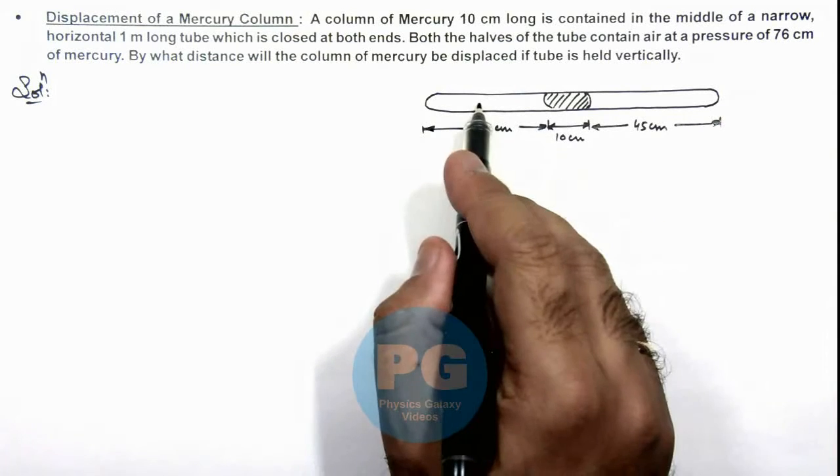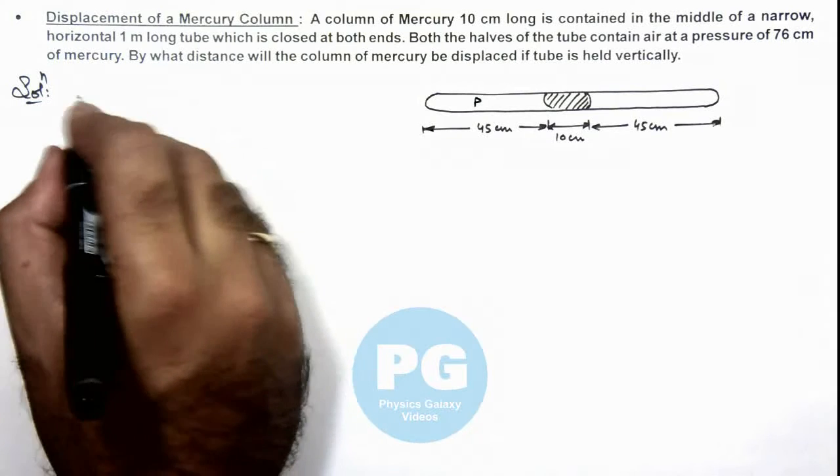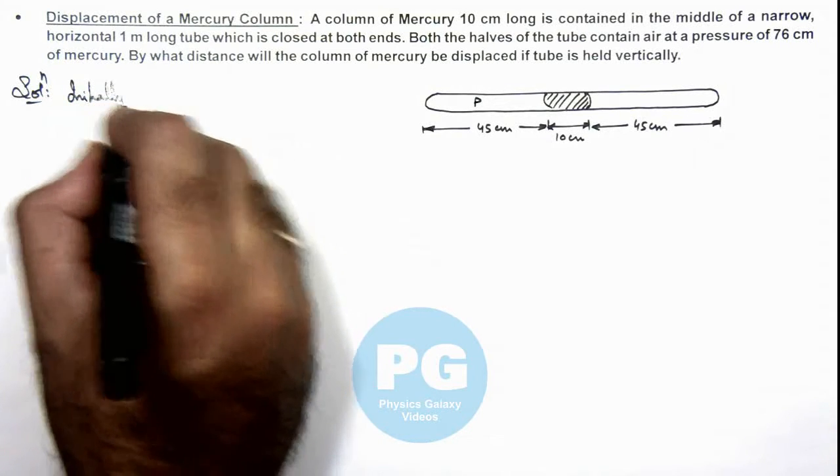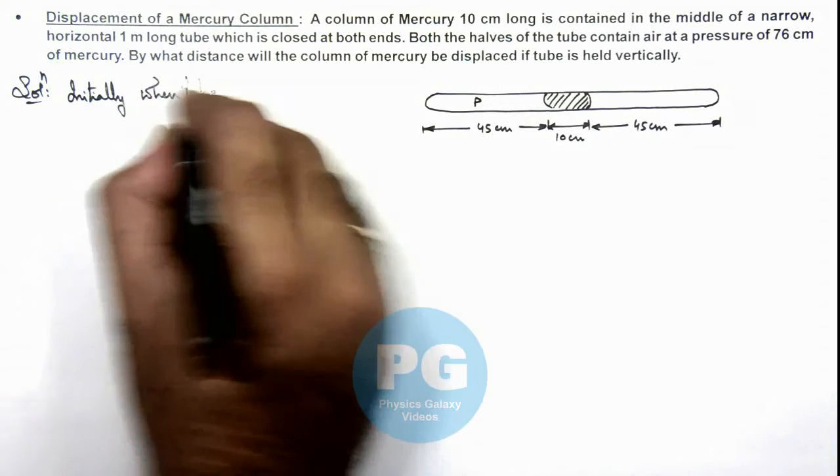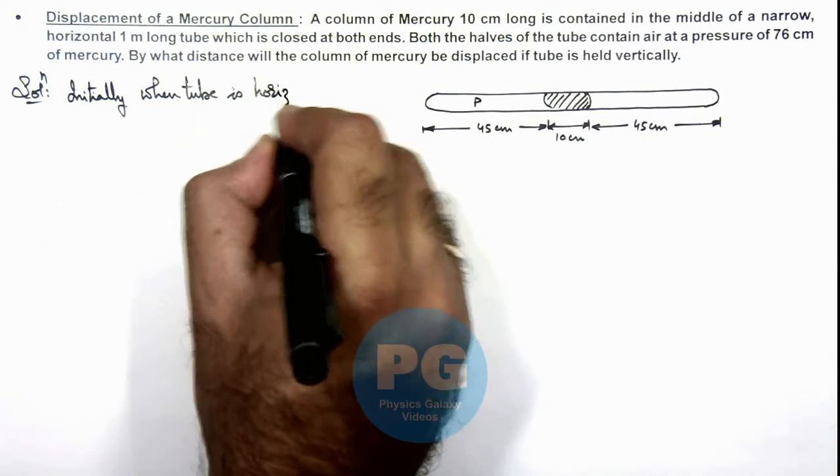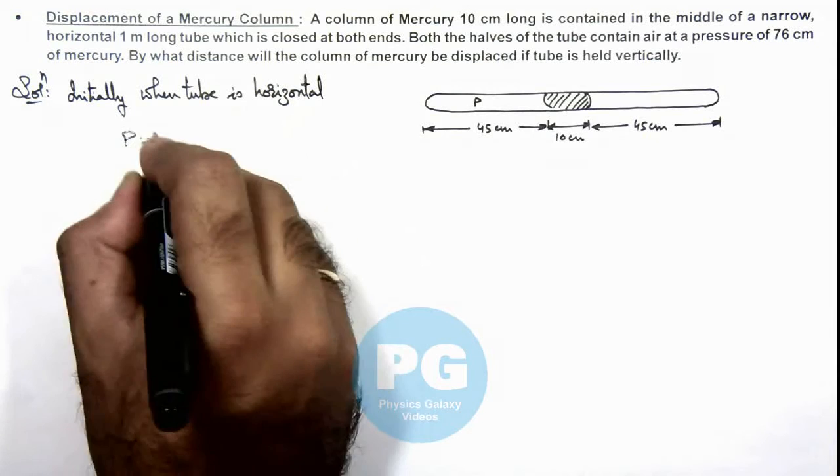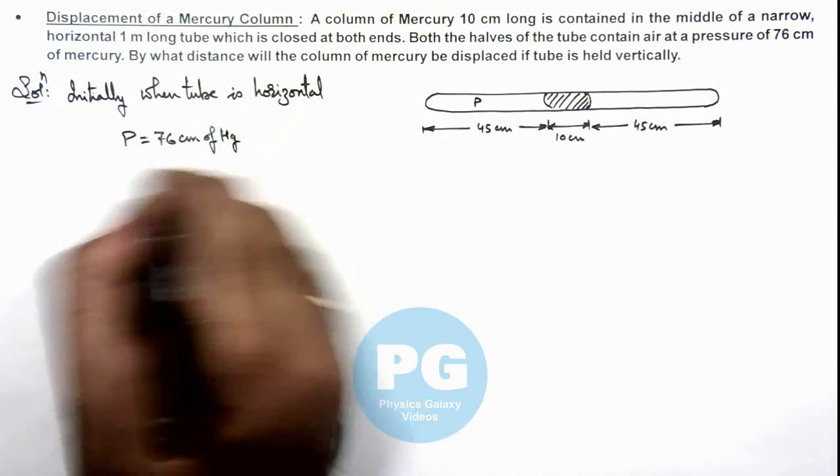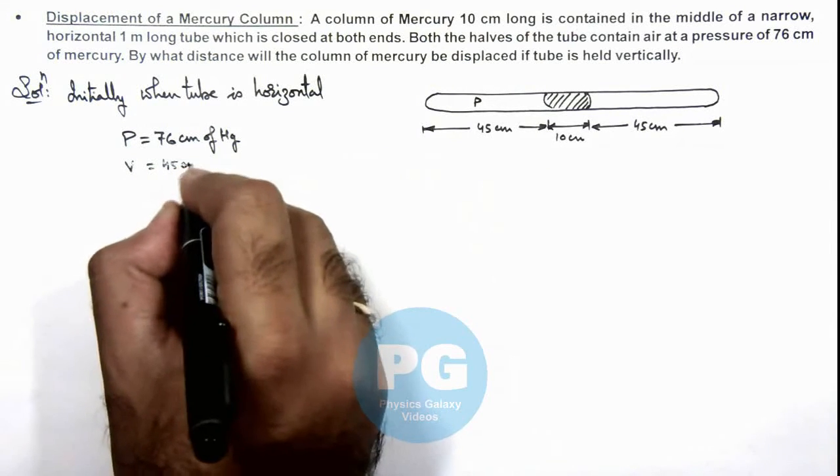And on both the side the pressure is given to us as p, and the value of p in initial state, we can write initially when tube is horizontal, pressure of air is given as 76 centimeter of mercury and here the volume of air is given to us as 45 centimeter of tube.